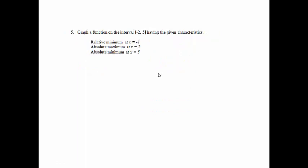Number 5: Graph a function on the interval negative 2 to 5 having the given characteristics. There's a relative minimum at x = −1, an absolute maximum at x = 2, and an absolute minimum at x = 5. A relative minimum means there is going to be a valley — not the lowest value, but a little valley.